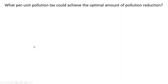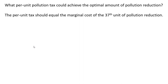What per-unit pollution tax could achieve the optimal amount of pollution reduction? The per-unit tax should equal the marginal cost of the 37th unit of pollution reduction. Here's our marginal cost equation — we evaluate it at Q = 37, and we get a marginal cost of $46.